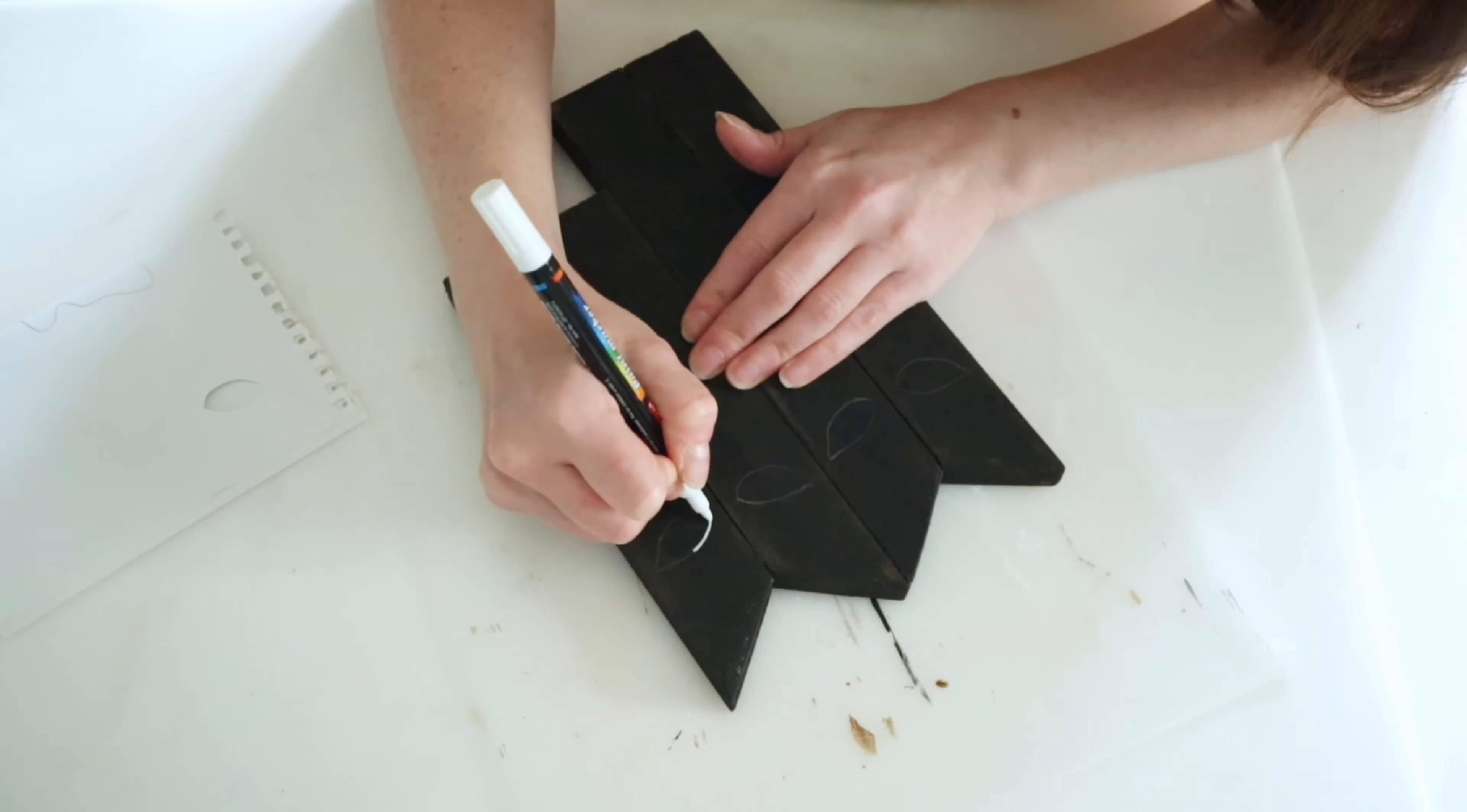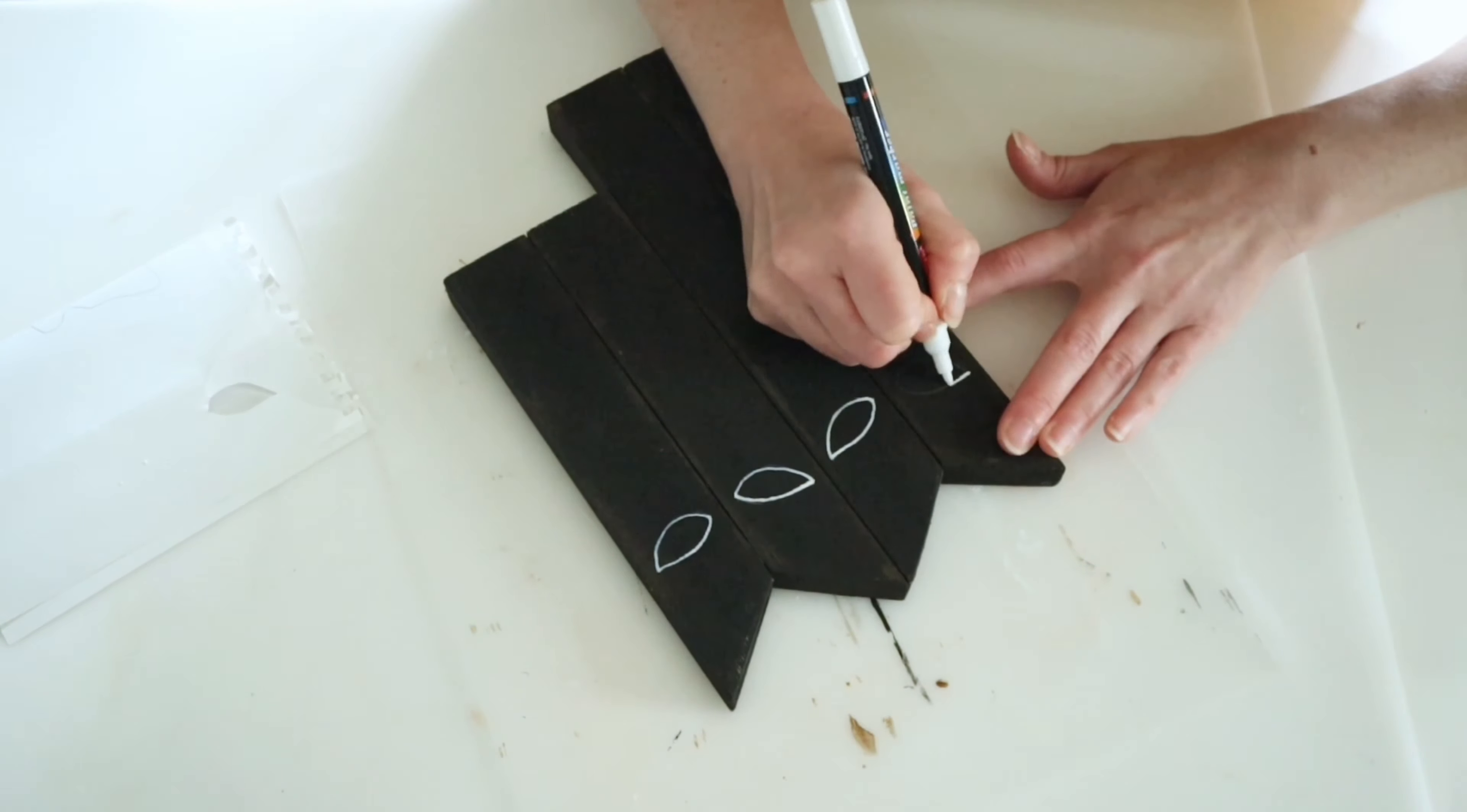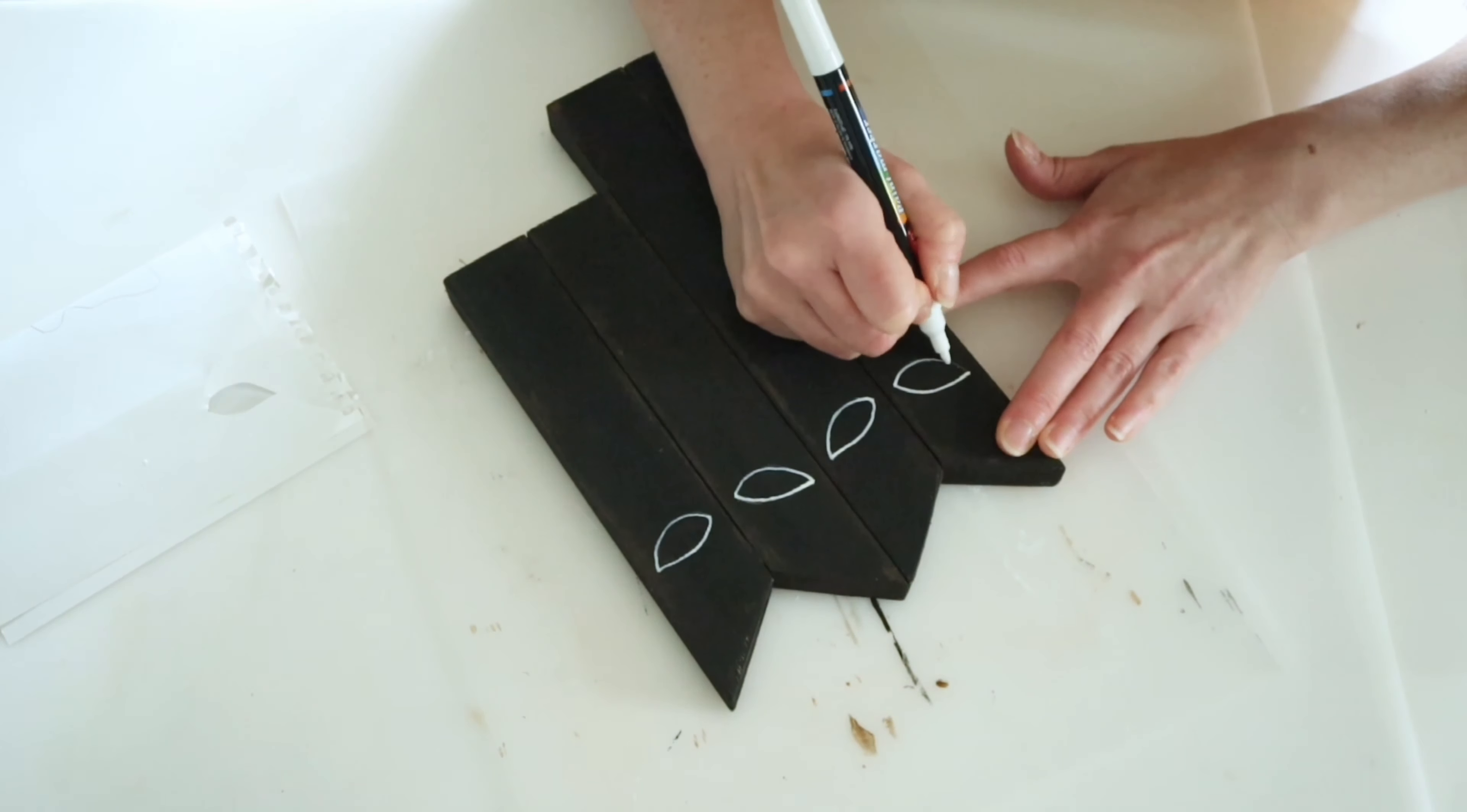I just went in with my white paint marker to go over where I had traced with a pencil and then I'm going to fill these eyes in with a small brush and some of my white chalk paint.